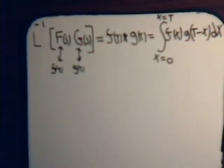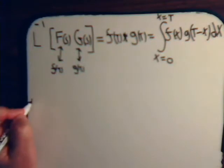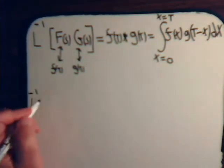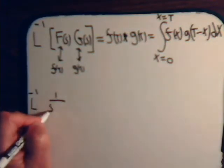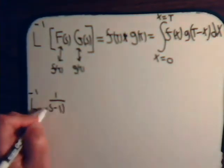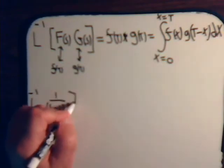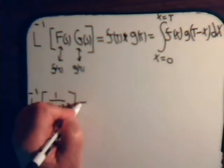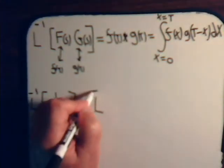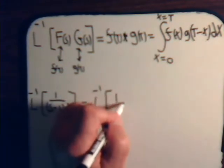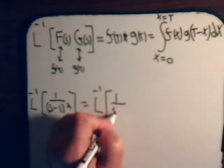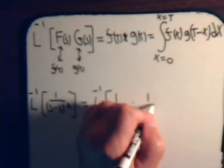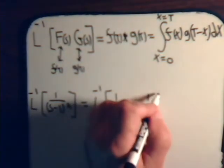So we want the inverse Laplace transform of 1 over s minus 1 squared. Remember what we want to do is write whatever problem we have as a product of two Laplace transforms. Here this is pretty easy — that would just be the inverse Laplace transform of 1 over s minus 1 times 1 over s minus 1.